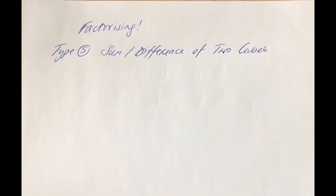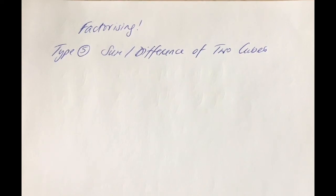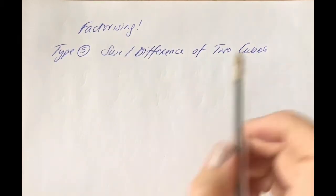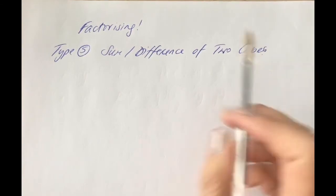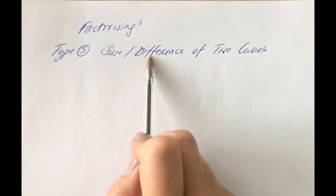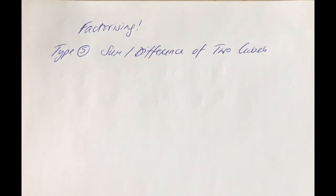This is our final type of factorising, type 5, and this is when you have the sum or difference of two cubes. Unlike the third type where we had the difference of two squares — where you can only ever have the difference — in the fifth type of factorising, when we are dealing with cubes, you can have the sum or the difference of two cubes.